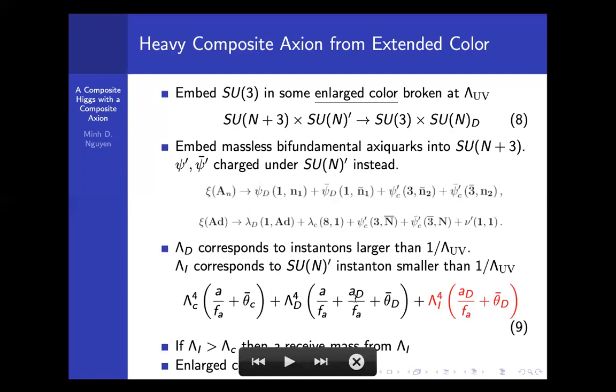The first two terms are the same, except for Λd. Now the Λd coming from the SU(Nd) instanton. They're going to run from ρ equals zero instanton to 1/Λd, but it's still going to be cut off at 1/Λ_UV because this is the scale where the SU(Nd) emerges. Instead, the instanton at higher scale only couples to a_D. This new contribution is this small instanton contribution, Λi. This only takes into account the SU(N)' instanton with size smaller than 1/Λ_UV.